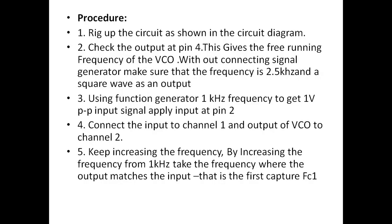Here is the procedure for conducting this experiment. Rig up the circuit as shown in the circuit diagram. Check the output at pin 4. This gives the free-running frequency of the VCO without connecting the signal generator. Make sure that frequency is 2.5 kilohertz and square wave as output. Using signal generator, 1 kilohertz frequency to get 1 volt peak to peak signal, apply input at pin 2.